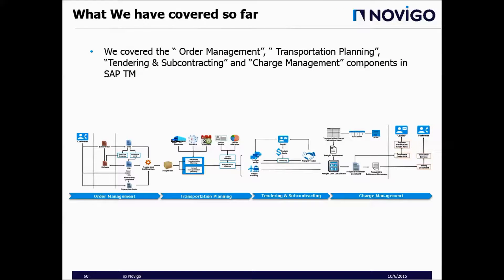This is the overview of what we've learned so far. We started with order management — how to receive customer orders, create OTR, DTR, and forwarding orders, and convert requirements into freight units. In transportation planning we saw how to plan freight units using resources, networks, and schedules into freight orders and freight bookings. In tendering we saw how freight orders can be tendered to different carriers. In charge management we covered cost calculation and key objects like freight agreement, transportation charge calculation sheet, rate table, scale, freight settlement document, and forwarding settlement document, and the integration between SAP ERP and SAP TM at settlement.